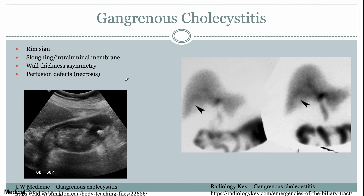Now we have a few unique HIDA cases. Acute and chronic cholecystitis are your bread and butter, but here's one unique situation: gangrenous cholecystitis. You can see sloughed membranes on ultrasound with asymmetric wall thickening and stones and sludge within the gallbladder. On HIDA, the sign is a rim sign — a rim of activity in the gallbladder fossa around the inferior hepatic lobe, with no uptake within the gallbladder itself. No gallbladder uptake is already by definition acute cholecystitis, but the additional rim of activity indicates gangrenous cholecystitis, which is much more severe and requires more immediate attention.